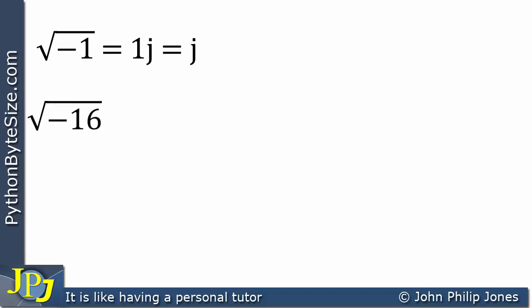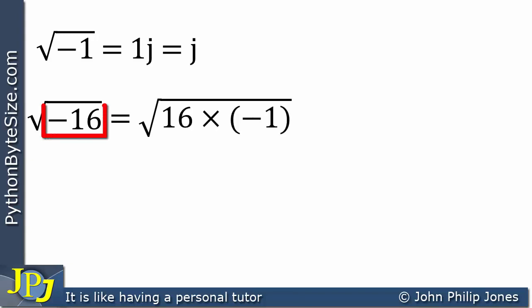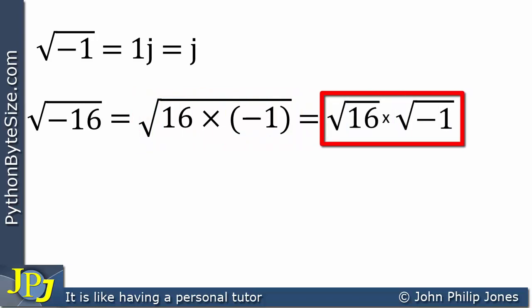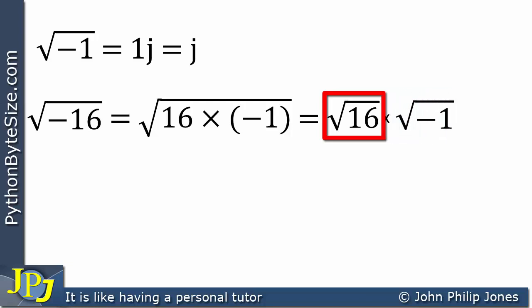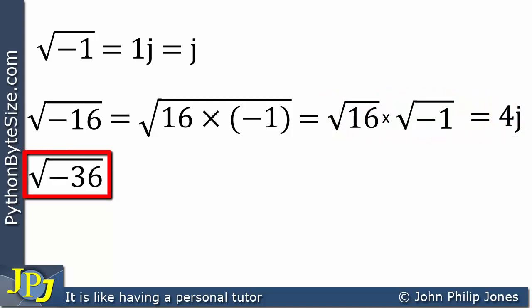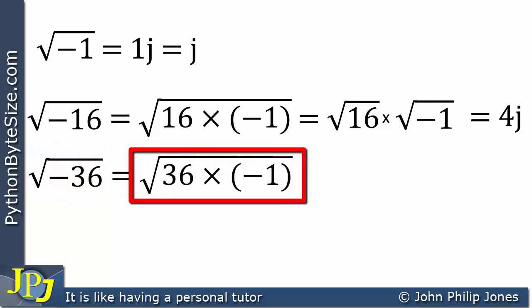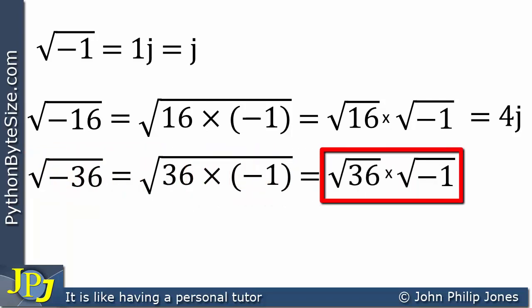What about the square root of minus 16? We can say that minus 16 is 16 times minus 1, and then split up the square root as the square root of 16 times the square root of minus 1. Clearly the square root of 16 is 4, and replacing the square root of minus 1 with j, this equals 4j. Let's take another example: the square root of minus 36. That's 36 times minus 1, split into the square root of 36 times the square root of minus 1. The square root of 36 is 6, so that equals 6j.